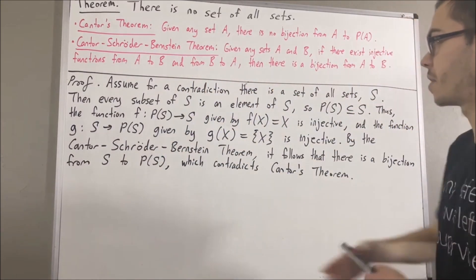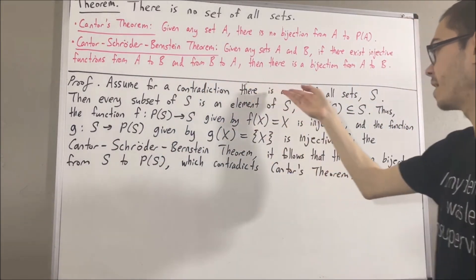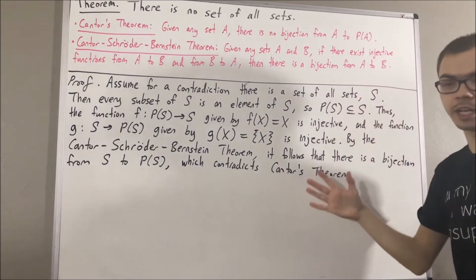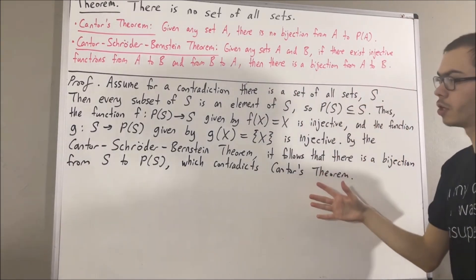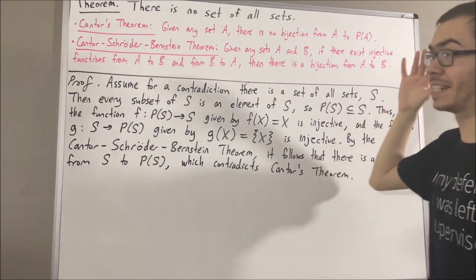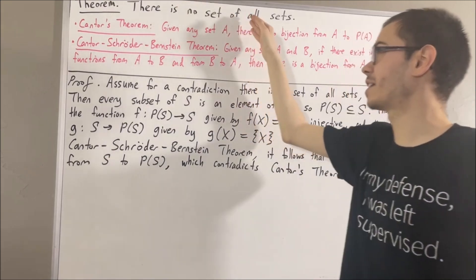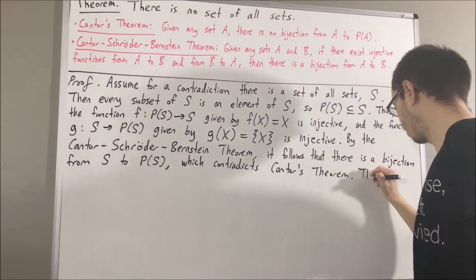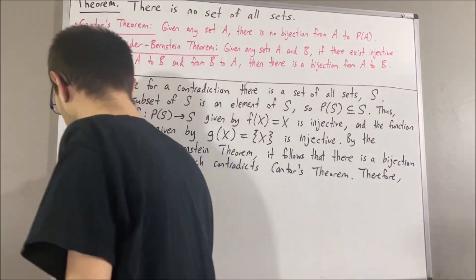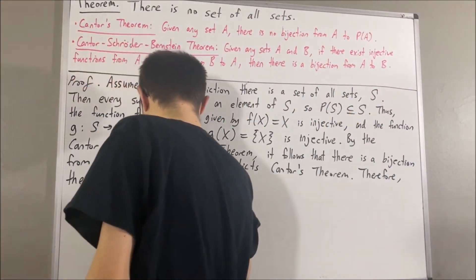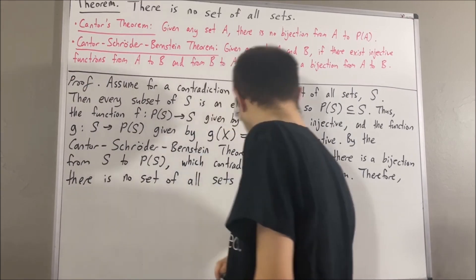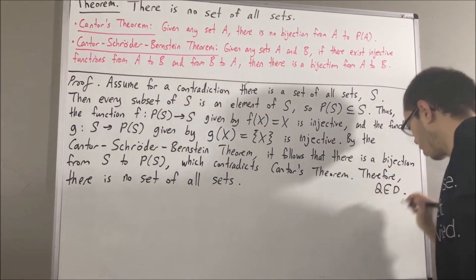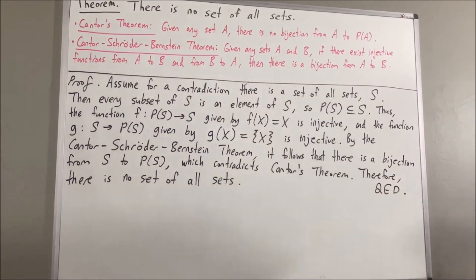Our assumption that there is a set of all sets led us to a contradiction. So we must instead have that there is no set of all sets. This completes the proof.